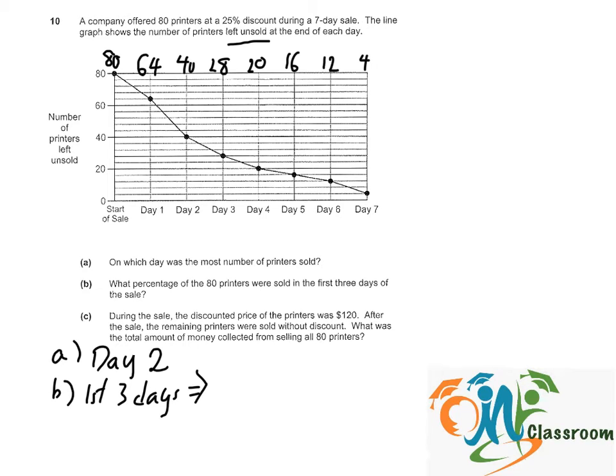That will be just taking 80 minus the remaining printers on day 3, which is 28. So 80 minus 28 equals 52. And if we were to convert 52 printers out of 80 into a percentage, that will give us 52 out of 80 times 100% equals 65%.